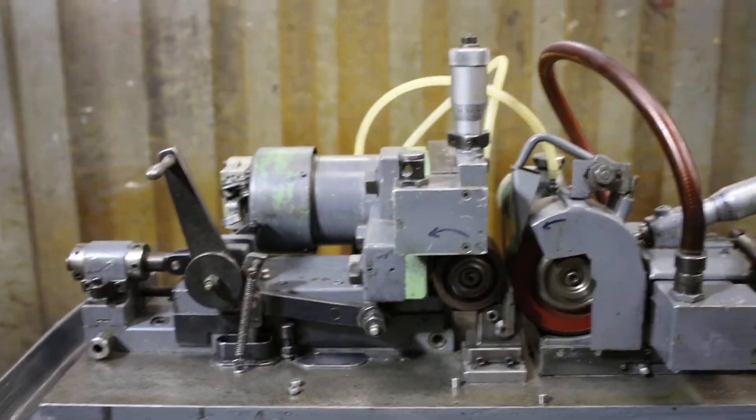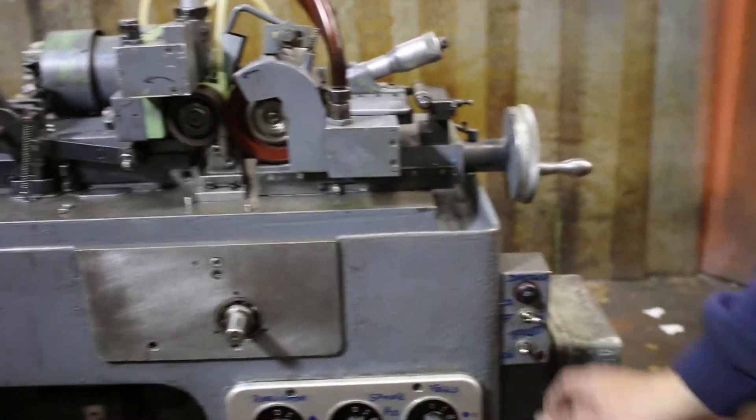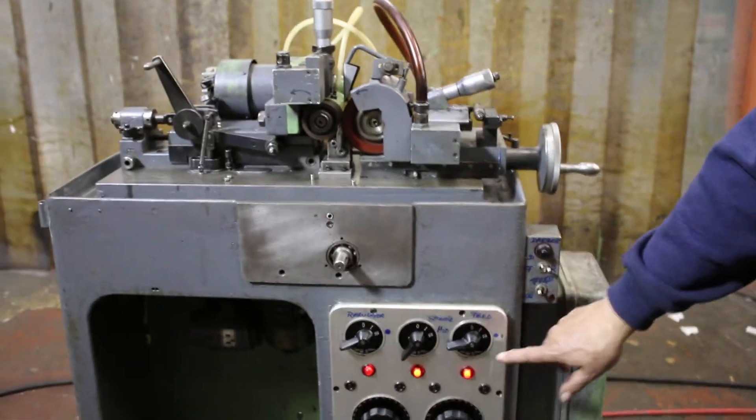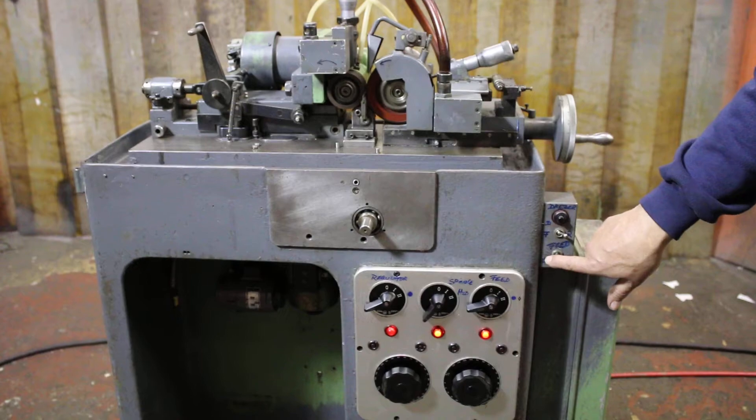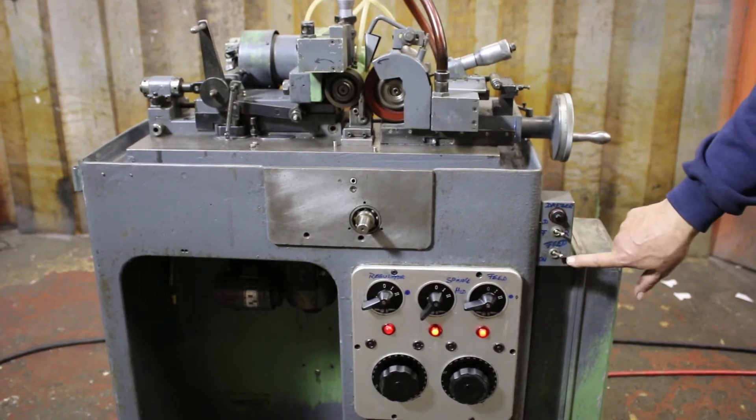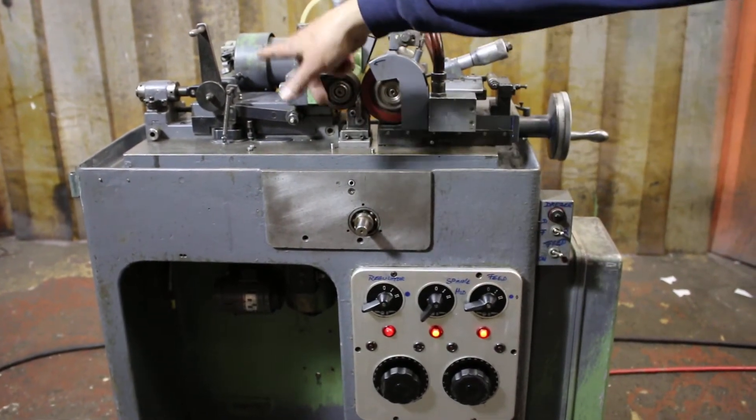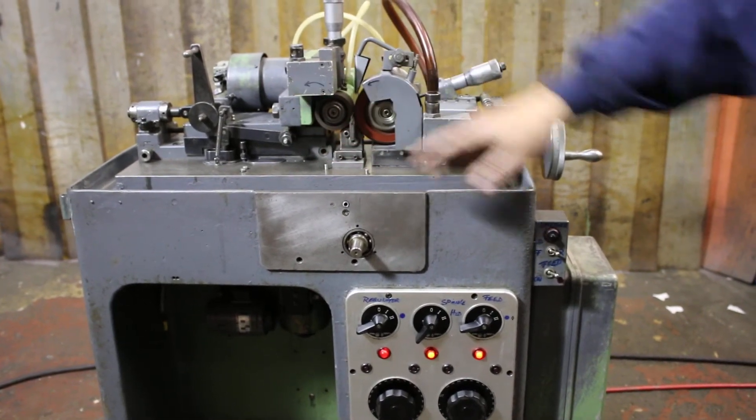This dresser over here, if we wanted to show that dresser working, you'd want to make sure that you had this selector switch pointed at the diamond. Once I switch this over to the diamond, I will no longer have my automatic cycle here. That automatically cuts that out.